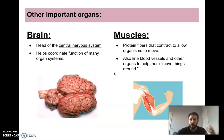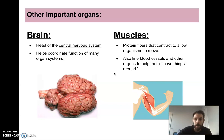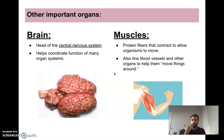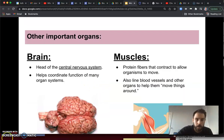A few other organs: the brain is the head of the central nervous system. It helps coordinate functions of so many different organ systems — we could go into a lot of depth on the brain, but we're not going to too much right now. I also wanted to mention muscles — protein fibers that contract and allow organisms to move. They also line blood vessels and other organs to help things move around. And those are the notes on the digestive system. Thanks for watching everyone.